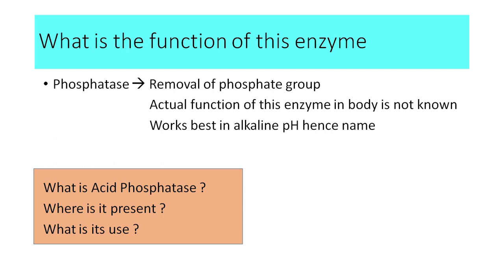The word phosphatase means an enzyme which is capable of removing a phosphate group from a molecule. Because this enzyme acts best in alkaline pH, it is called alkaline phosphatase. The actual function of this enzyme in the body is not known, but it has use in identifying diseases in the body.